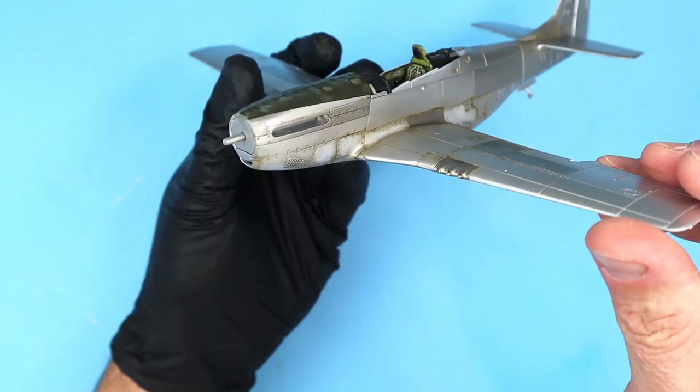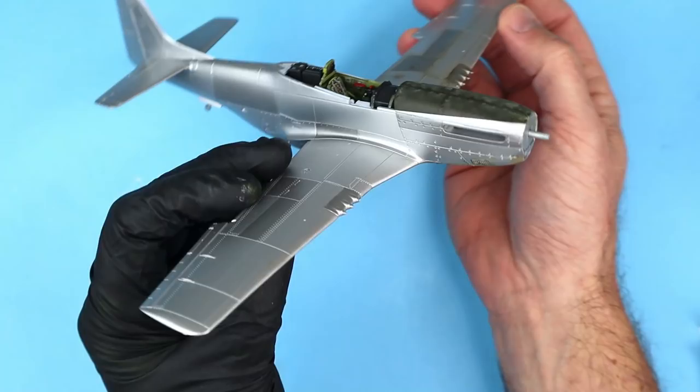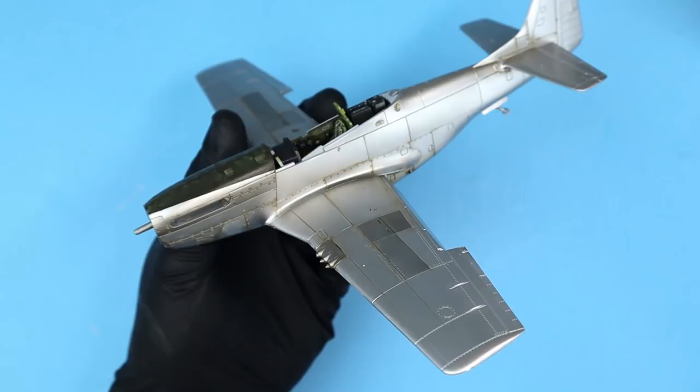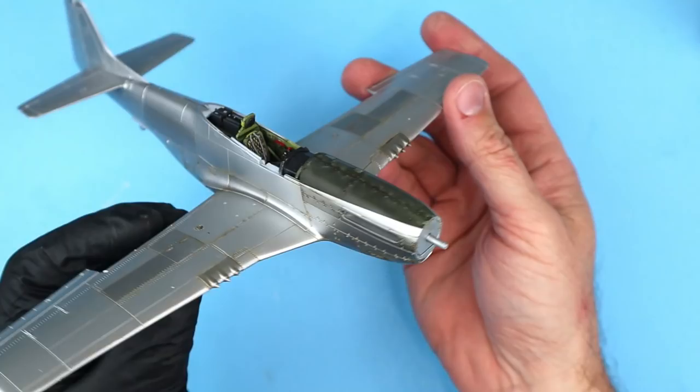Here you can see the difference between the initial weathering effects that I've applied to the left side versus the right side that hasn't been done quite yet. And now here's a look at the Mustang with all of the initial oil weathering effects applied.